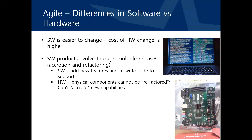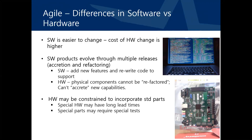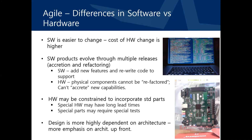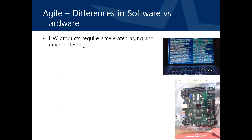In software, developers add new features and rewrite or augment the code to support them. In hardware, physical components cannot be reused backwards like code, and one cannot simply add new capabilities without the basic architecture supporting such augmentation. Hardware may be constrained to use standard parts, reducing flexibility in development. Standard parts may be chosen because special hardware would have long lead times, cost more, or require special tests, adding to development costs and schedule. This means hardware design is more dependent on architecture, and more time should be spent architecting the solution up front. In addition, hardware products typically require accelerated aging and environmental tests.